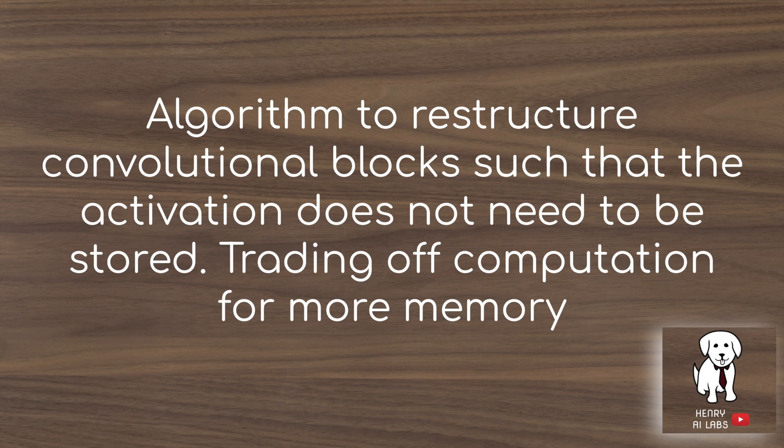Typically as you would do a forward pass through the network, you would store all those intermediate activations to use in backpropagation. With the RevNet restructuring of the convolutional block, you're trading off computation for more memory.